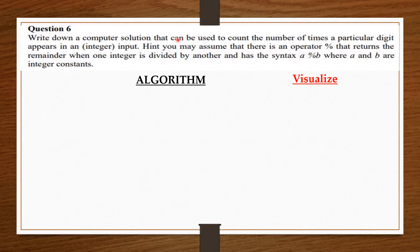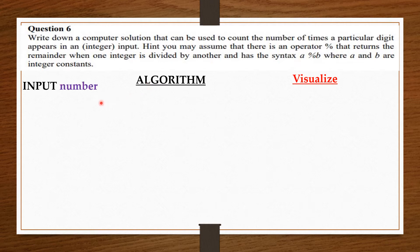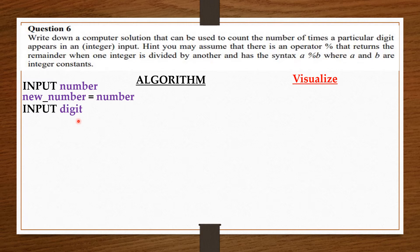Write down a computer solution that can be used to count the number of times a particular digit appears in an integer input. You may assume that there is an operator modulus that retains the remainder when one integer is divided by another, and has the syntax a modulus b where a and b are integer constants. For the algorithm, we are going to ask the user to input the set of numbers — we say input number. Then we store a copy of the user's number in a new variable called new number. Then we ask the user to input the particular digit they want to find the number of times it appears. So we say input digit. Then we create an empty variable called counter, which is going to count the number of times that particular digit appears in the number.